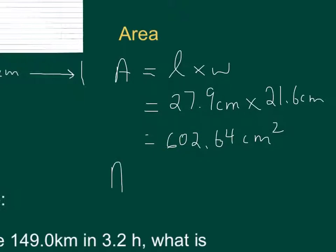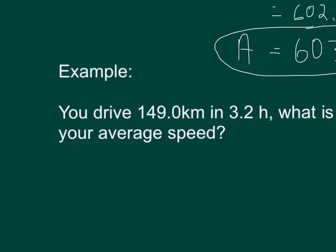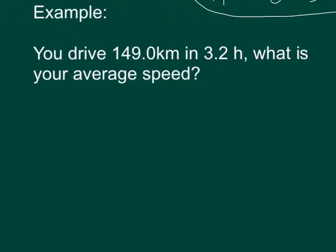Rounding 602.64 to three significant digits: we look at the digit after the second position — it's a 2, but the digit beside it is a 6, so we round up. The area is 603 centimeters squared, and that's our answer to the correct number of significant digits.